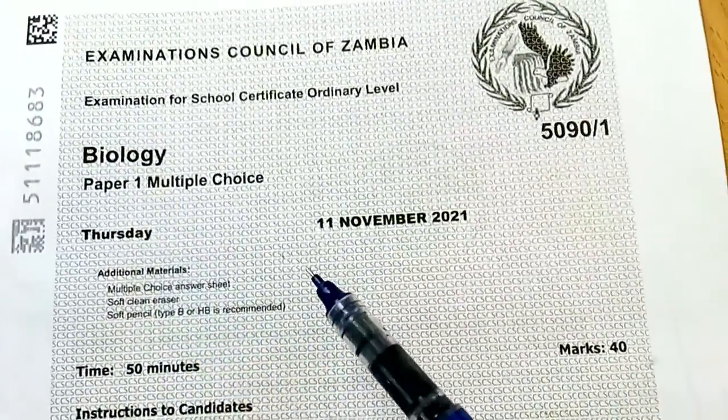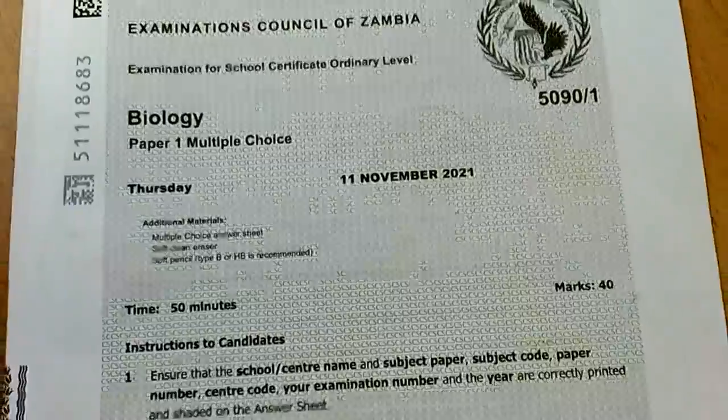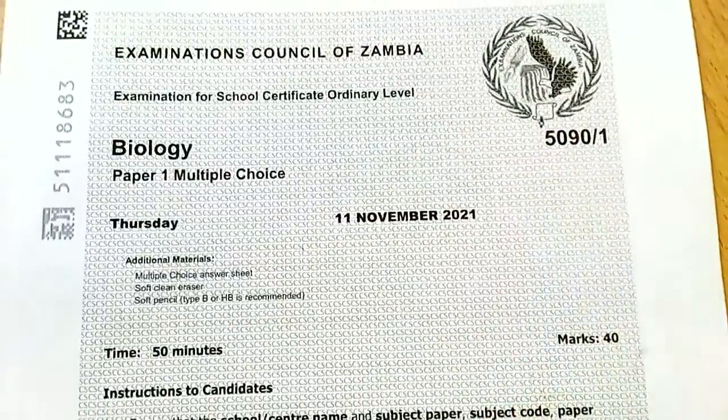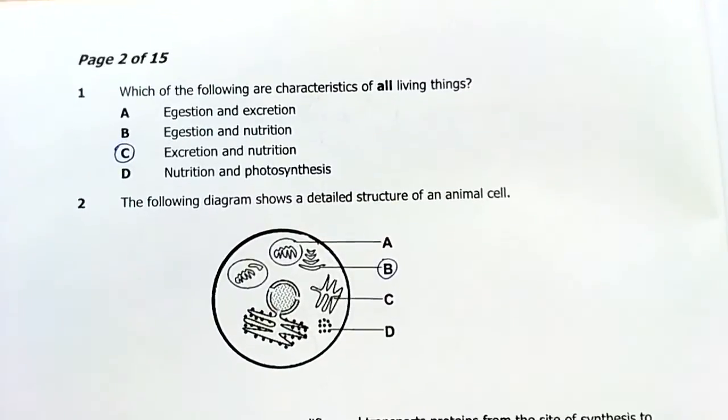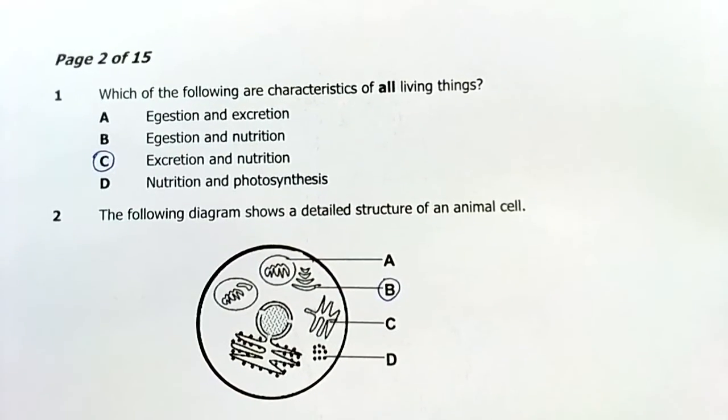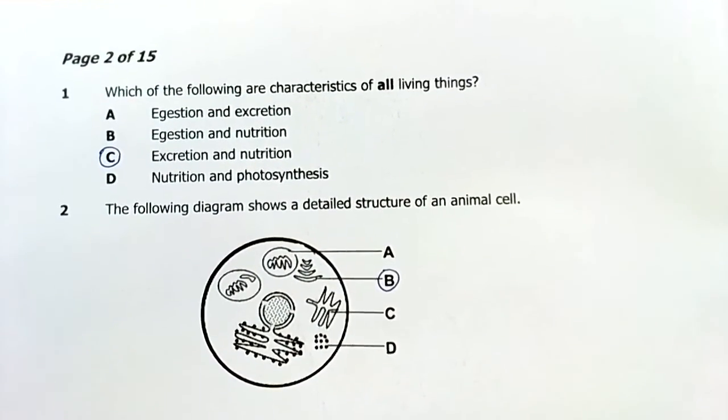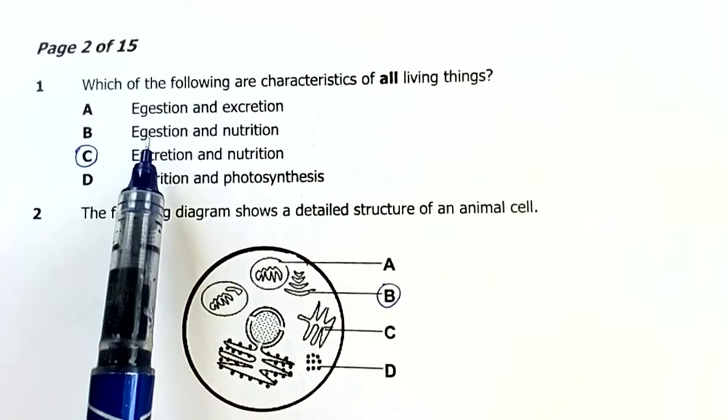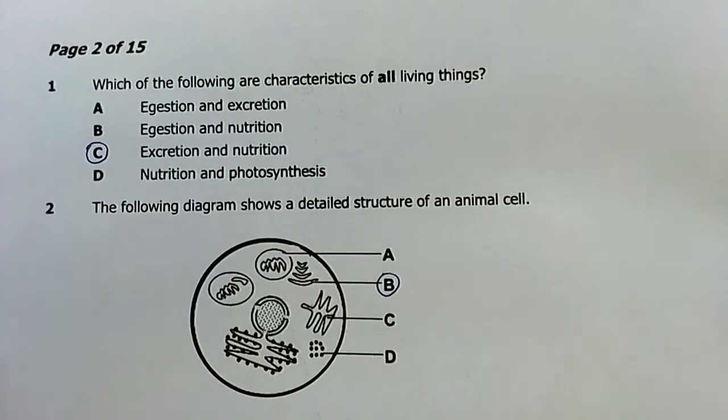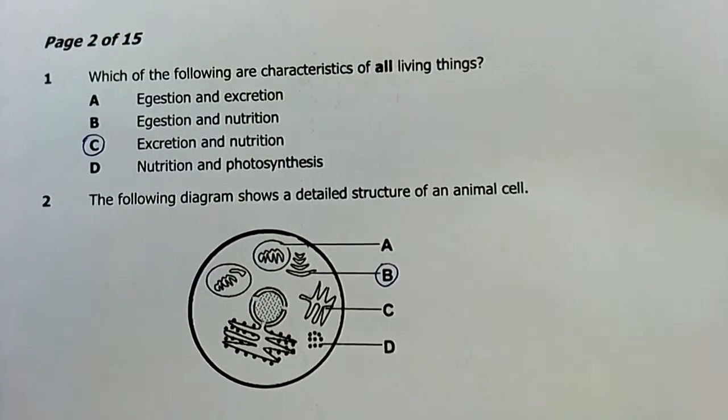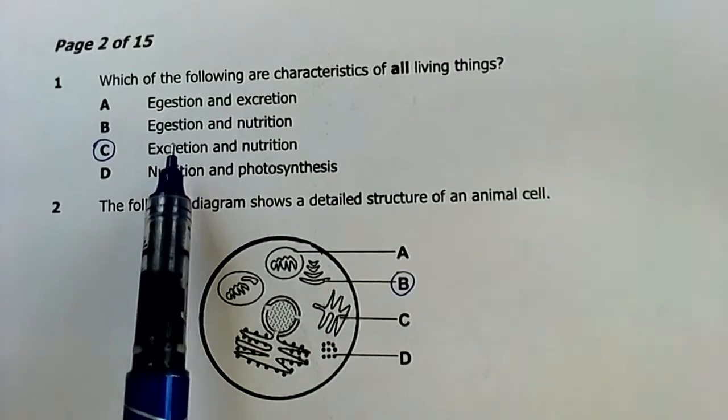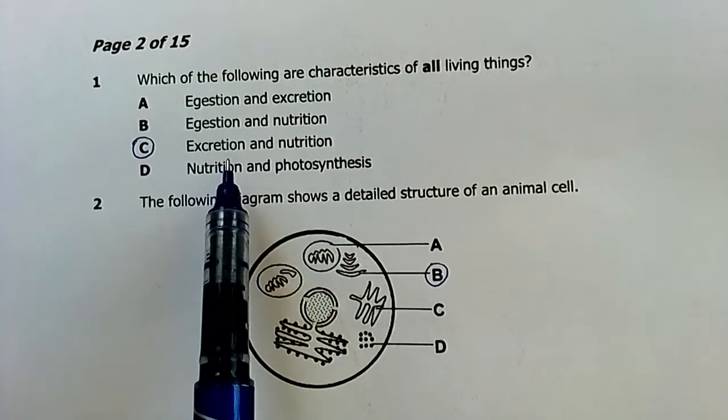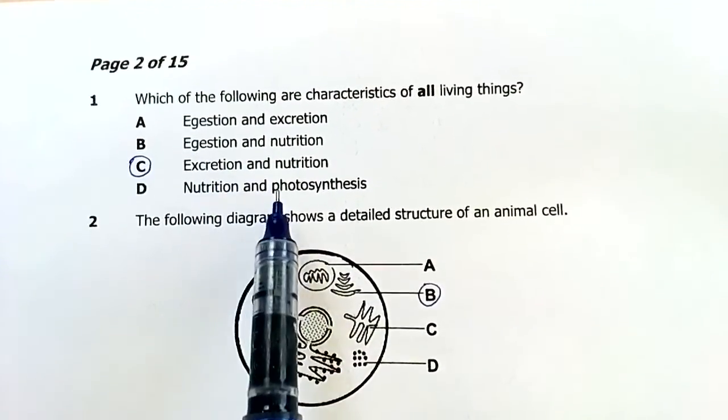Biology paper one multiple choice, 11th November 2021, is the paper I'm looking at today. Let's get to question one. Which of the following are characteristics of all living things? Egestion is just part of holozoic nutrition, you don't find egestion in amoeba and some organisms. Excretion is found in all organisms and nutrition, they all have to feed, they all have to remove unwanted or waste products from their bodies. Photosynthesis is only found in plants and some species of algae, so C is our answer.